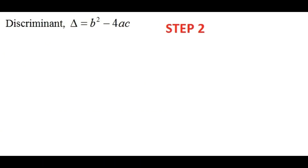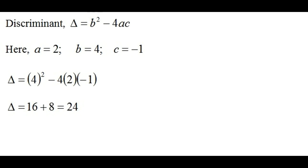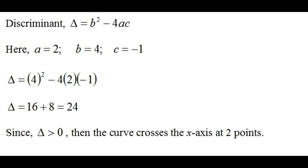Now step number 2: the discriminant analysis. To work out the discriminant, we calculate delta equals b squared minus 4ac. Our a, b and c values from the quadratic are 2, 4 and minus 1. Substituting into delta gives us 24. Since delta equals 24 which is greater than zero, our quadratic curve crosses the x-axis at two points. Let's calculate the coordinates of these two points.